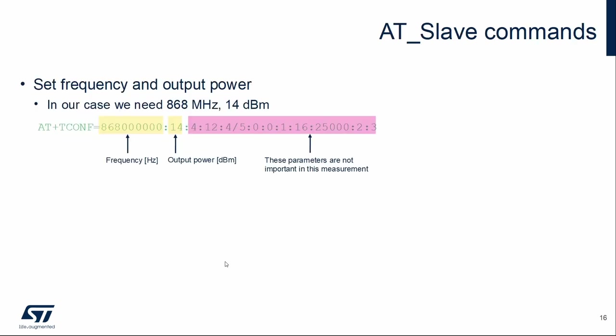For power and current measurement, we can use unmodulated carrier. The tconf configuration command with the following parameters is used for configuration. Of the yellow parameters, frequency and output power are important in this case. The ttone command is used to switch on the carrier. To turn it off, we can use the toff command.